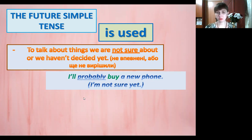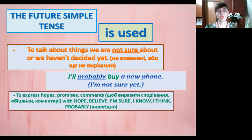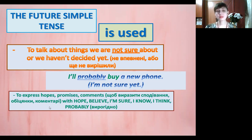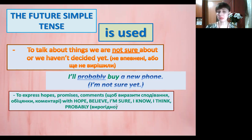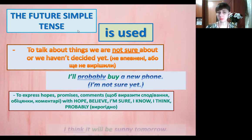To express hopes, promises, comments. Майбутній простий час вживається, щоб виразити сподівання, обіцянки, коментарі. І з такими словами, як hope, believe, I'm sure, I know, I think, probably – вірогідно. Тобто, якщо ви хочете сказати: I hope – я сподіваюсь, I believe – я вірю, I'm sure – я впевнений, I know – я знаю, I think – я думаю, probably – вірогідно, то це потрібно використовувати в реченні the future simple tense.